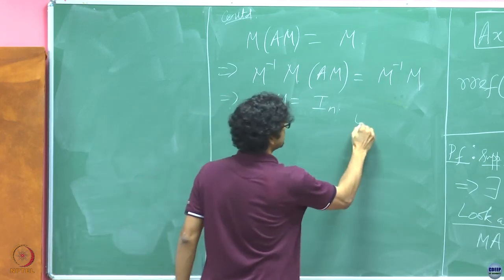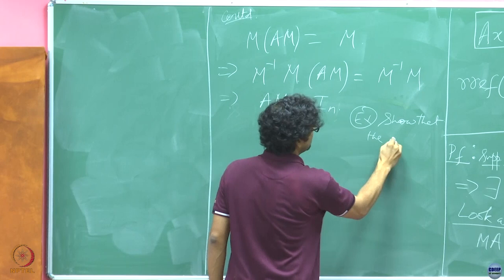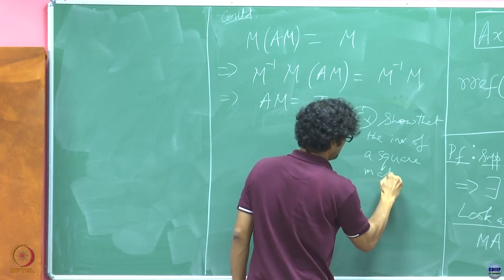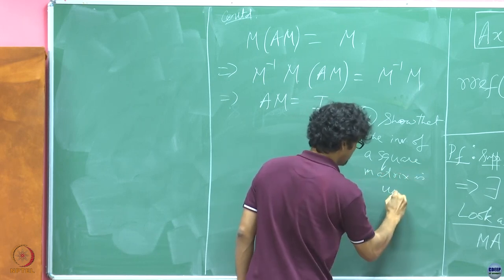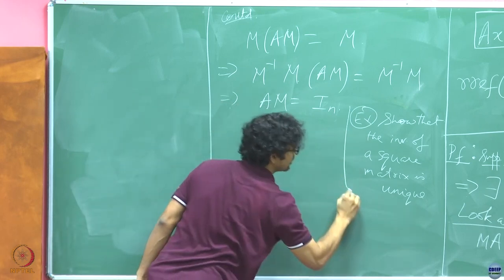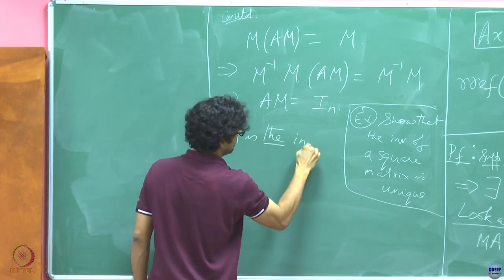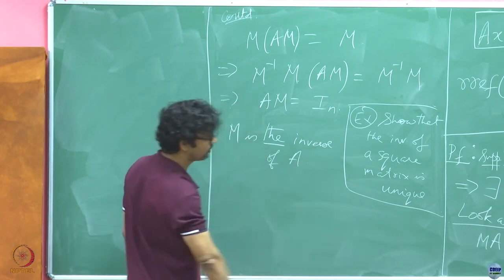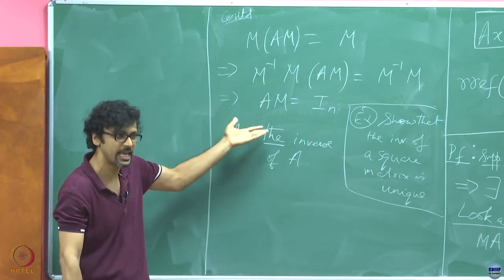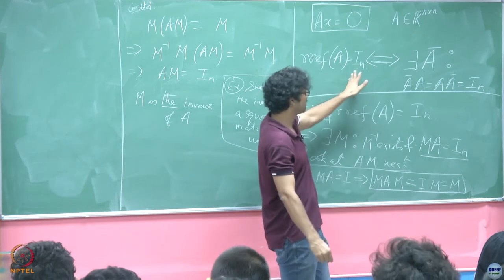Take that as an exercise — show that the inverse of a square matrix is unique. If you do show that, then based on this exercise, M is the inverse of A. So I have actually shown more than what this claims. This claim says A must be invertible; I have also given a constructive method of explicitly saying what that inverse will be. It is exactly that matrix which takes A to the identity in the RREF process. So RREF is identity implies A is invertible. But now I need to show the other way as well.